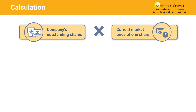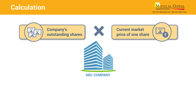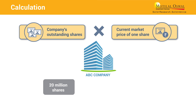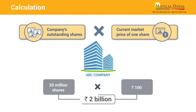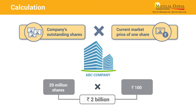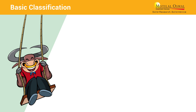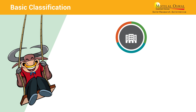Let us take an example of company ABC, which has 20 million shares selling at rupees 100 per share. This gives a market cap of 2 billion rupees. Companies are categorized into three types according to their market capitalization.